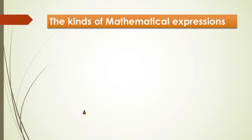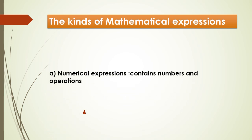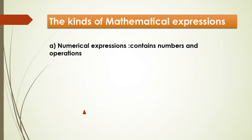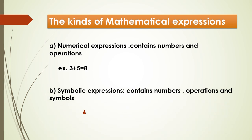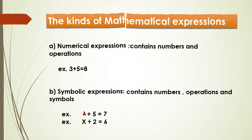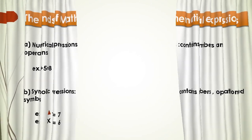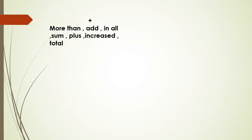Now the kinds of mathematical expressions. We have only two kinds. The first is called numerical expressions — it contains numbers and operations. For example, three plus five equals eight. The second kind is symbolic expressions — it contains numbers, operations, and symbols. For example, triangle plus five equals seven, or x divided by two equals six.